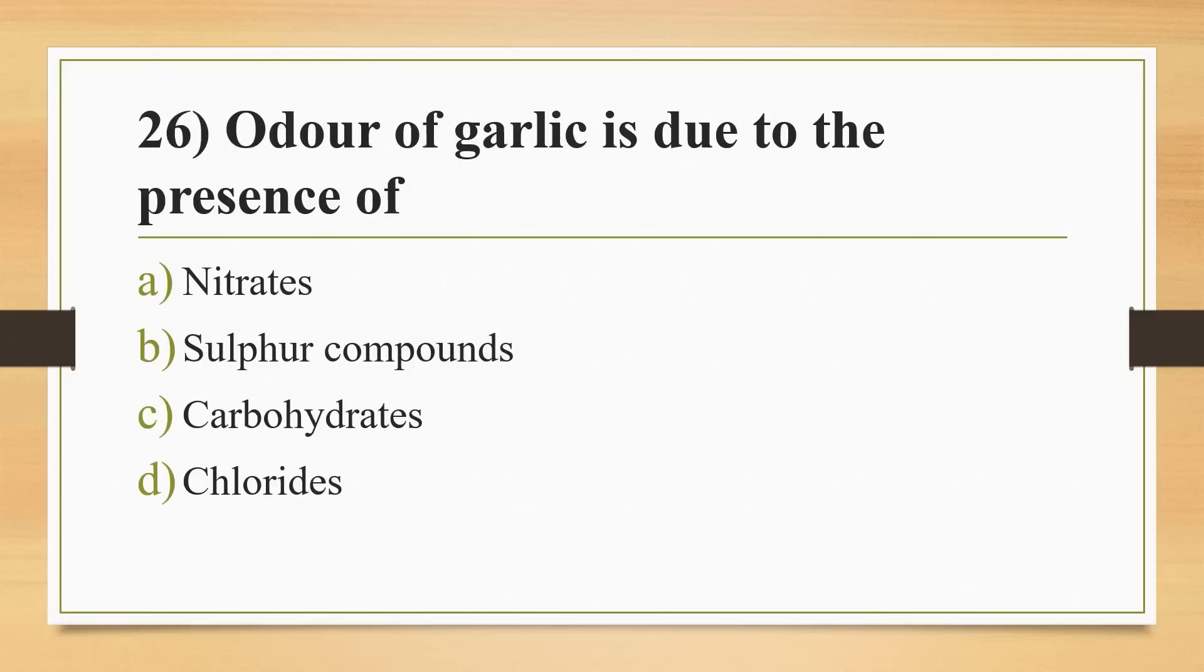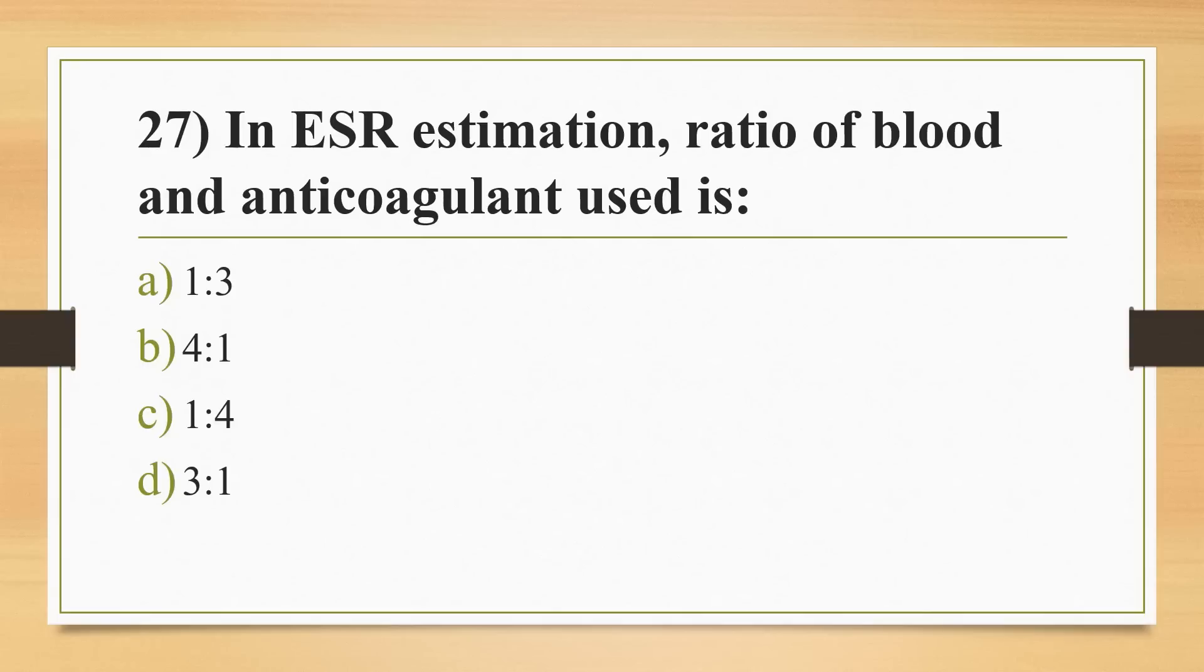Twenty-sixth question: odor of garlic is due to the presence of? Options: nitrates, sulfur compounds, carbohydrates, or chlorides. Answer is Option B, sulfur compounds. Twenty-seventh question: in ESR estimation, ratio of blood and anticoagulant used is? Options: 1 is to 3, 4 is to 1, 1 is to 4, or 3 is to 1. Answer is Option B, 4 is to 1. If the question is ratio of anticoagulant and blood, the answer will be 1 is to 4.